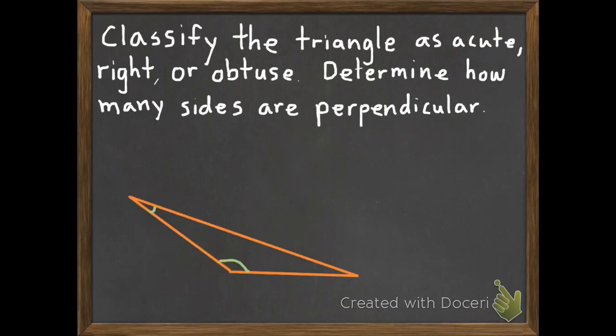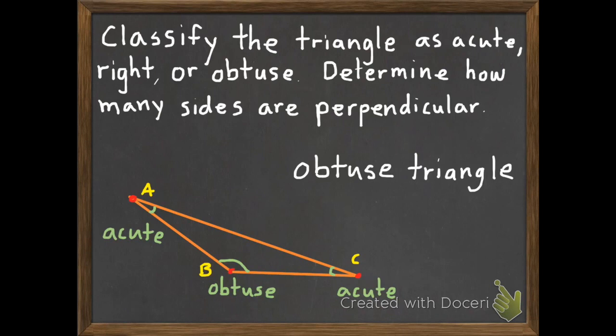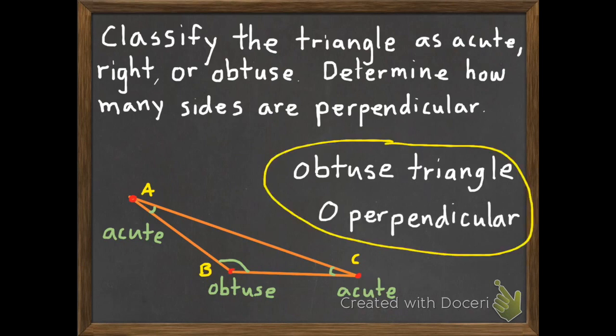Here's our second example. We need to classify if this triangle is an acute, right, or obtuse triangle. I have this one angle in the bottom middle that is definitely greater than 90 degrees, so that one is obtuse, and the other two are acute. If we have one obtuse angle, it means it is an obtuse triangle. And do we have any perpendicular lines — two lines that make a right angle? No. So there are zero perpendicular lines.